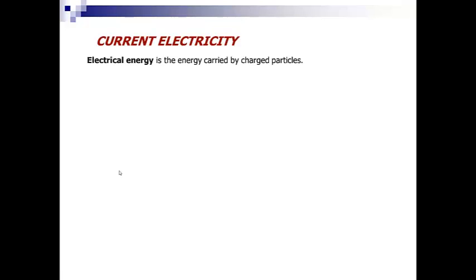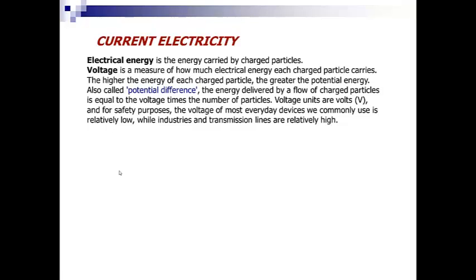Electrical energy is the energy carried by charged particles. Voltage is a measure of how much electrical energy each charged particle carries. The higher the energy of each charged particle, the greater the potential energy. Also called potential difference, the energy delivered by a flow of charged particles is equal to the voltage times the number of particles. Voltage units are volts, or V, and for safety purposes, the volts of most everyday devices we commonly use is relatively low, while industries and transmission lines are relatively high.